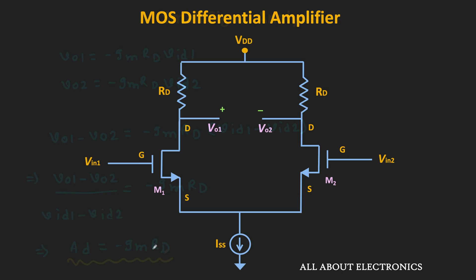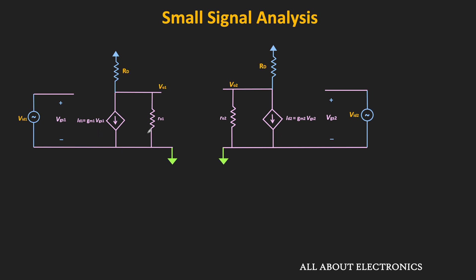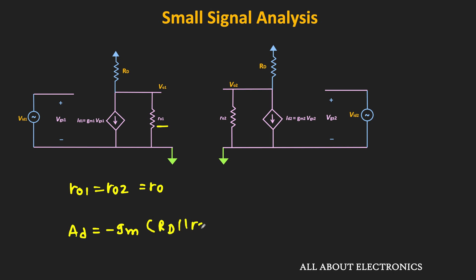So far we have neglected the effect of channel length modulation, assuming lambda equals zero. When lambda is non-zero — with a finite channel length modulation coefficient — the output resistance of the MOSFET also comes into the picture. In the small signal equivalent circuit, due to symmetry, the output resistance r01 equals r02 equals r0. In that case, r0 will be in parallel with Rd, and therefore the differential gain becomes minus gm times (Rd parallel r0).